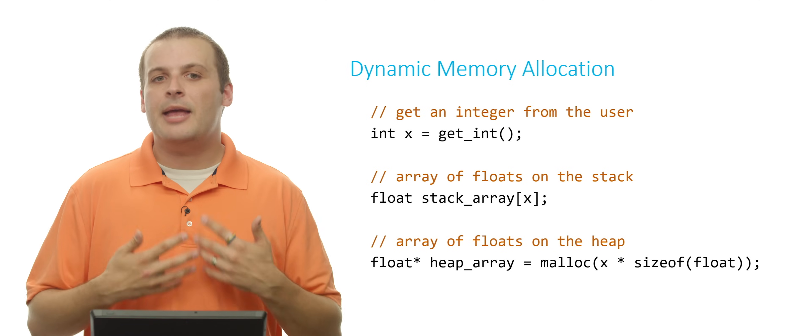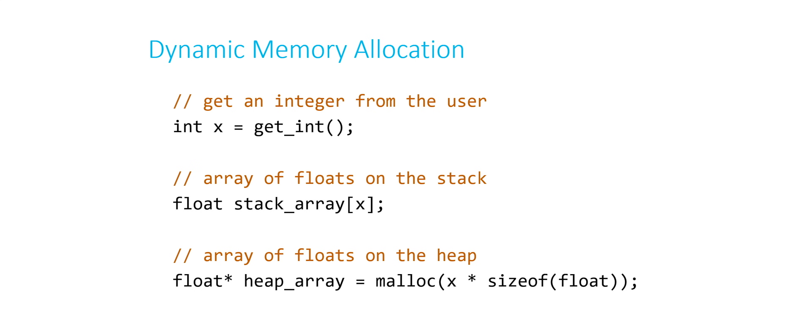And I can also dynamically allocate an array of floats on the heap, not on the stack. Remember, because we're dynamically allocating the memory this time. Float star heap array, so that's my pointer to the memory that I'm getting. And I want to malloc x times the size of a float.